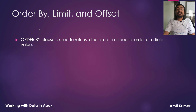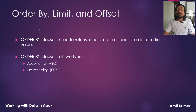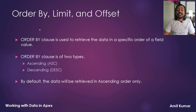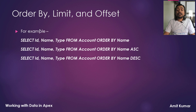ORDER BY clause is used to retrieve the data in a specific order of a field value. ORDER BY clause is of two types: ascending or descending. By default, data will be retrieved in ascending order only. For example, in the first query we haven't used ASC or DESC, the second specifies ascending, and the third specifies descending. The first and second will show records in ascending order of name, whereas the third will show in descending order.